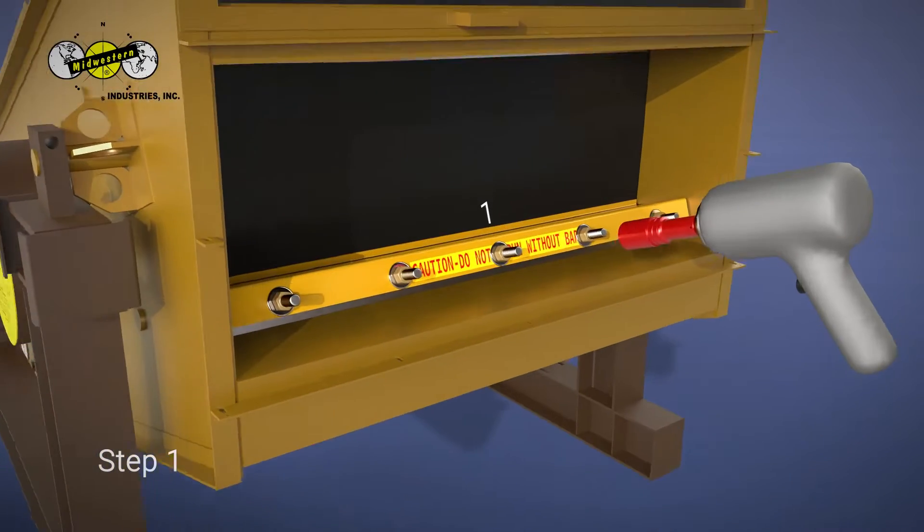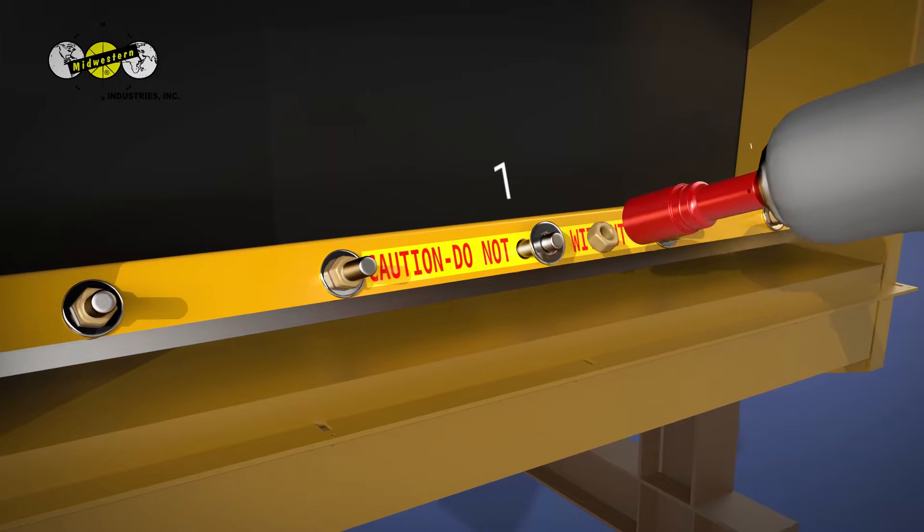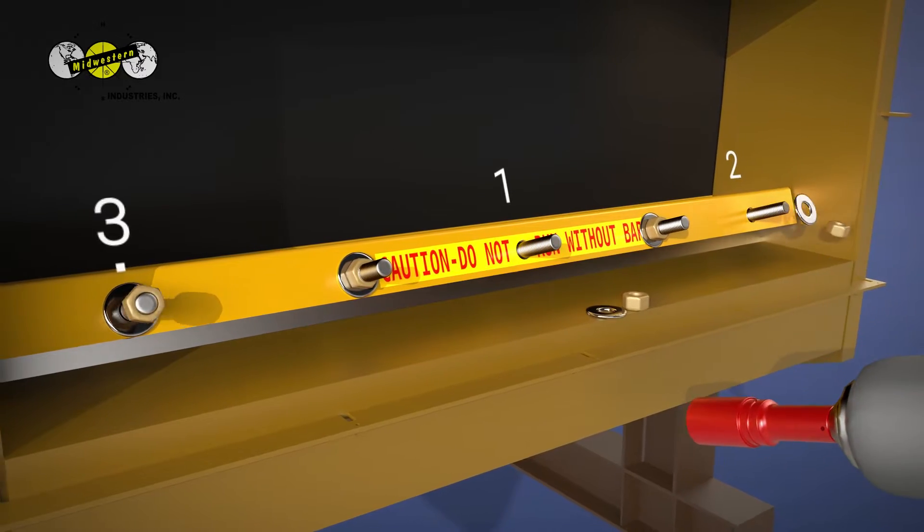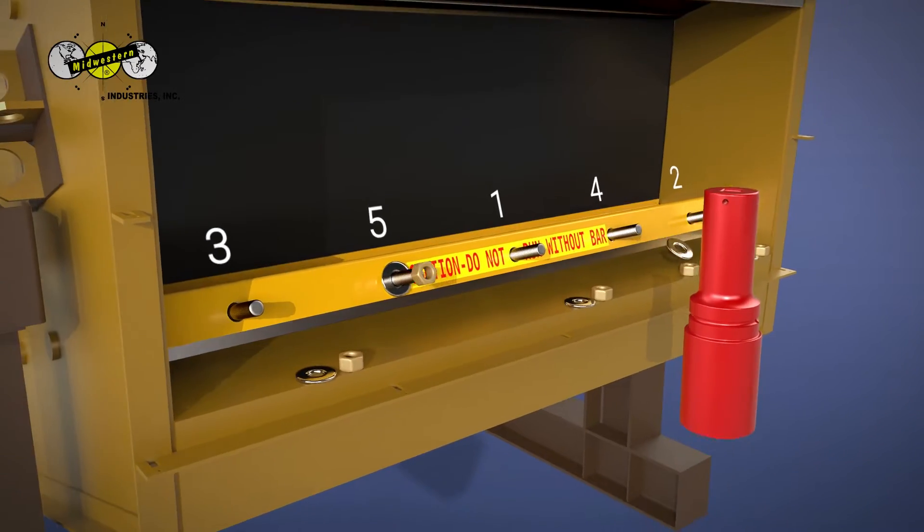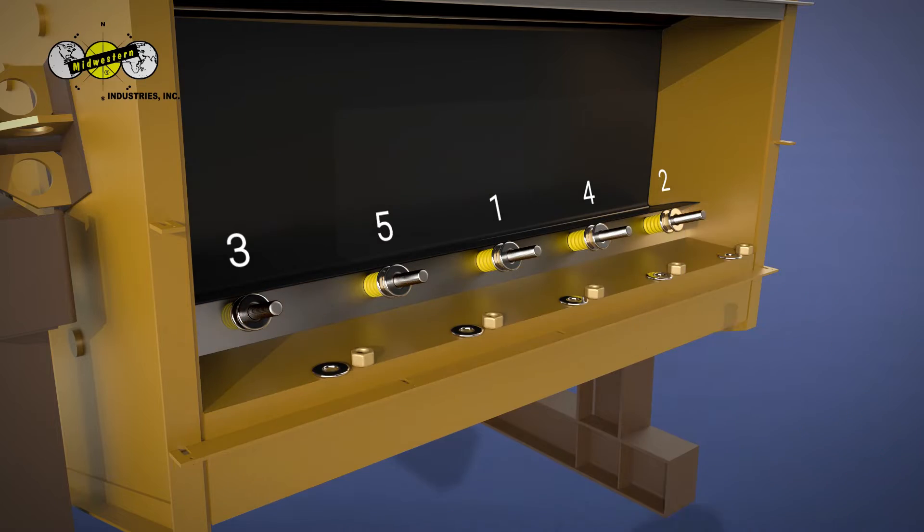Step 1: Remove the yellow safety guard bar, including the nuts and washers. Should you need an extended socket, Midwestern has them available for purchase.